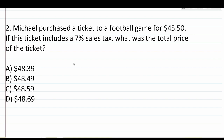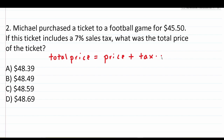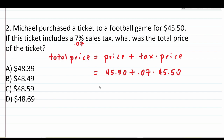Question two: Michael purchased a ticket to a football game for $45.50. If this ticket includes a 7% sales tax, what is the total price of the ticket? The total price equals the price plus the tax amount times the price. The price is $45.50 and the tax is 7%, which is 0.07 in decimal form. So this is 45.50 plus 0.07 times 45.50.